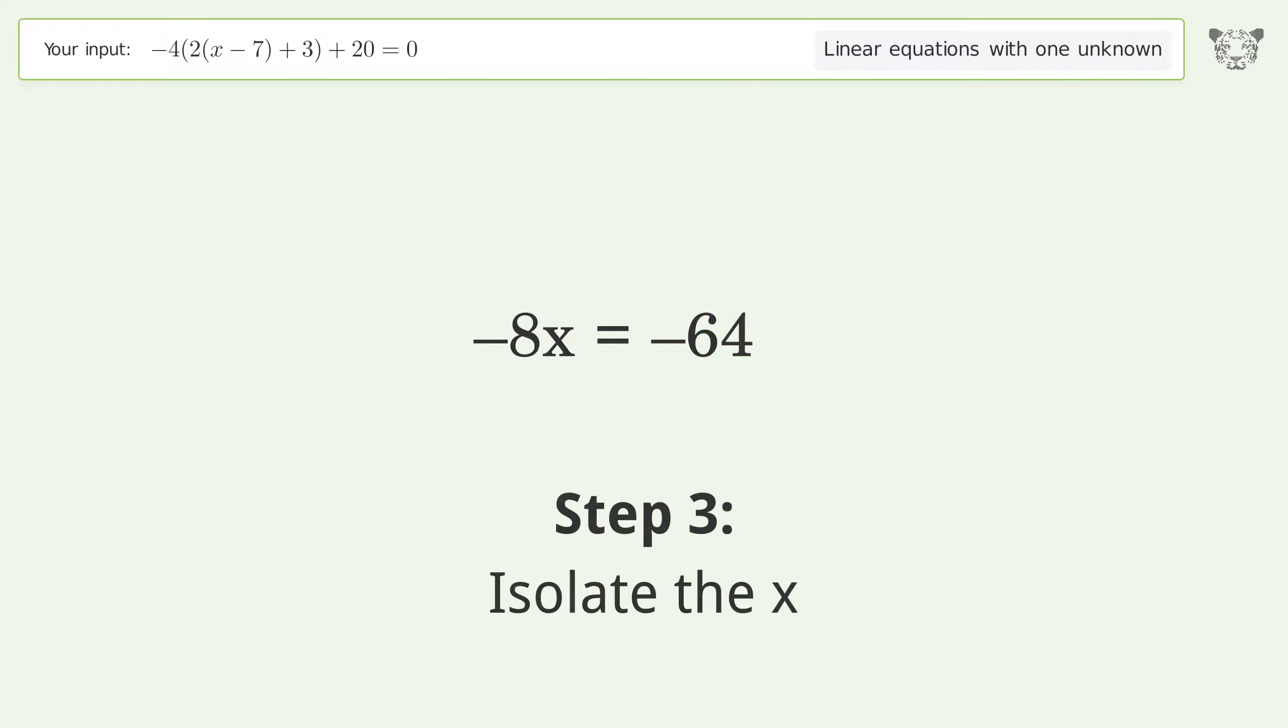Step 3: Isolate the x. Divide both sides by negative 8. Cancel out the negatives.